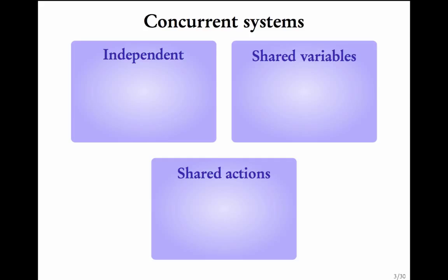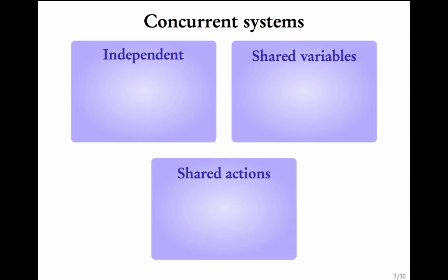We will be looking at three kinds of concurrent systems: independent systems, systems that have shared variables, and systems that have shared actions. Let us start with independent concurrent systems. I will be using the words parallel and concurrent interchangeably. Consider two parallel roads with traffic signals.